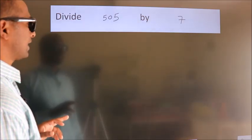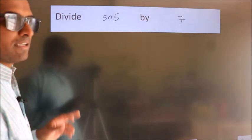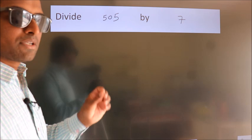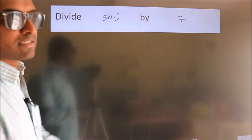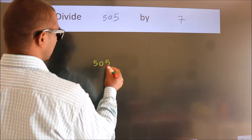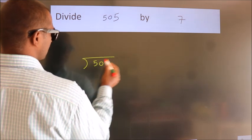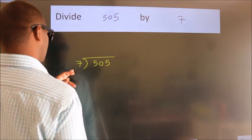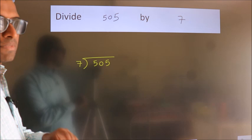Divide 505 by 7. To do this division, we should frame it in this way. 505 here, 7 here. This is your step 1.